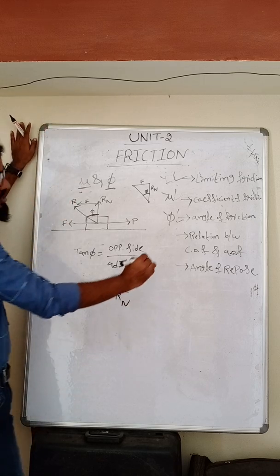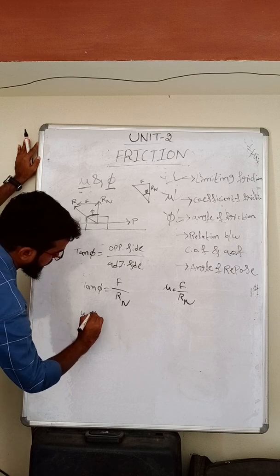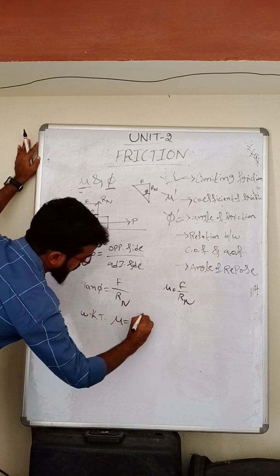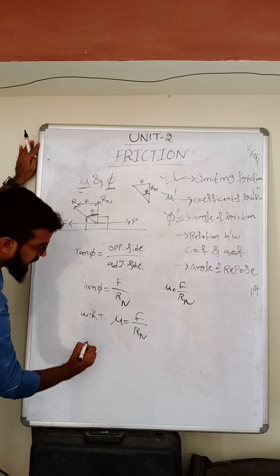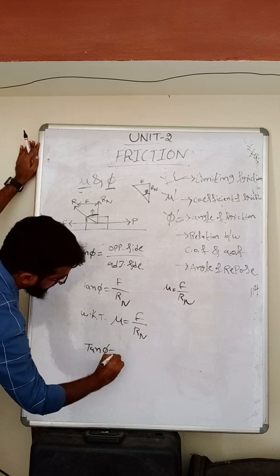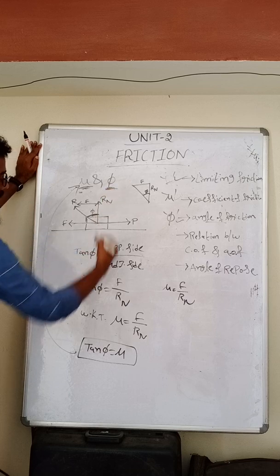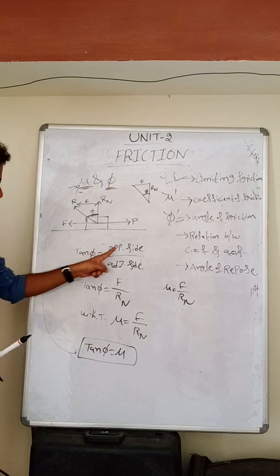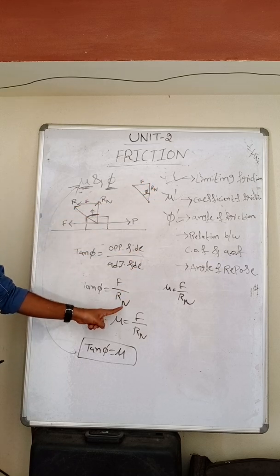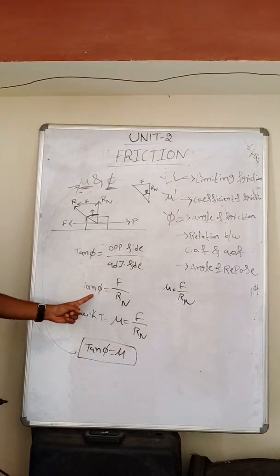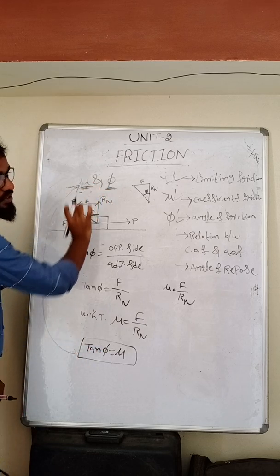We know from the coefficient of friction that μ = F/Rn. Since tan φ = F/Rn and μ = F/Rn, we directly get tan φ = μ. This is the relation between the coefficient of friction and the angle of friction: tan φ = μ.